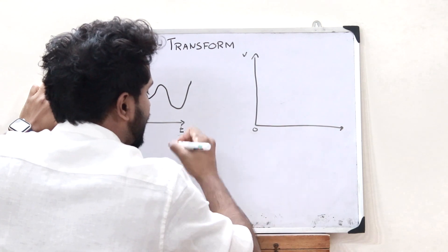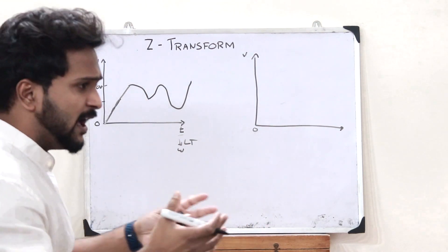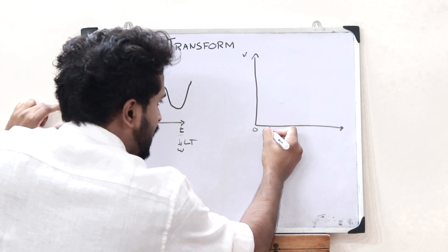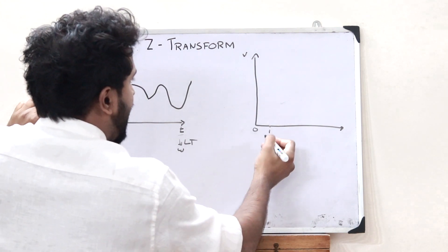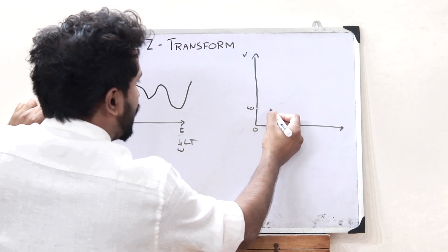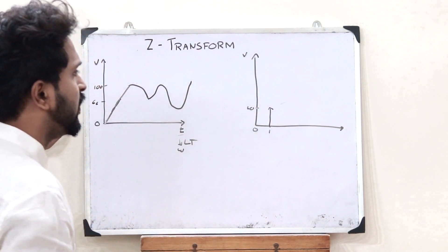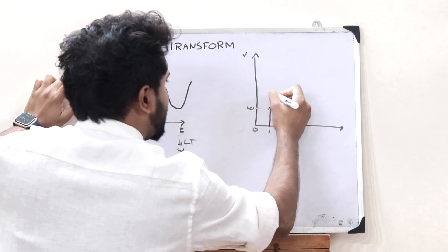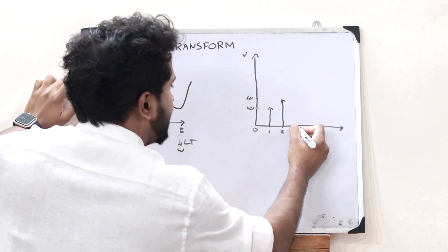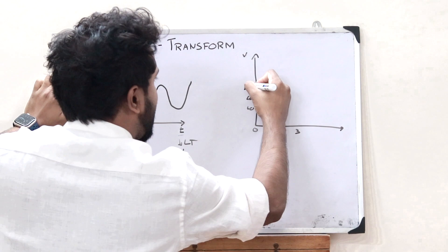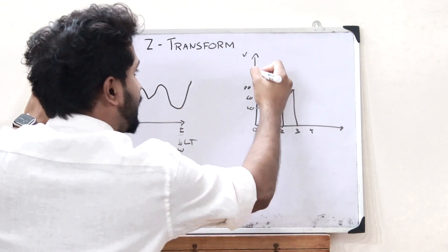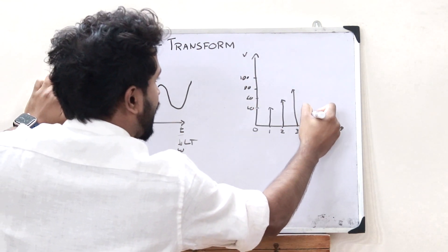At time t equals 0, I observe that I am at rest — my speed is 0 kilometers an hour. Next, at 1 second, I observe that my speed is 40 kilometers an hour. At t equals 2, my speed is 60 kilometers an hour. At t equals 3, my speed is 80 kilometers an hour. At t equals 4, my speed is 100 kilometers an hour.